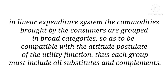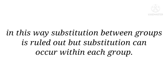In linear expenditure system, the commodities bought by the consumers are grouped in broad categories, so as to be compatible with the additivity postulate of the utility function. Thus, each group must include all substitutes and complements. In this way, substitution between groups is ruled out, but substitution can occur within each group.